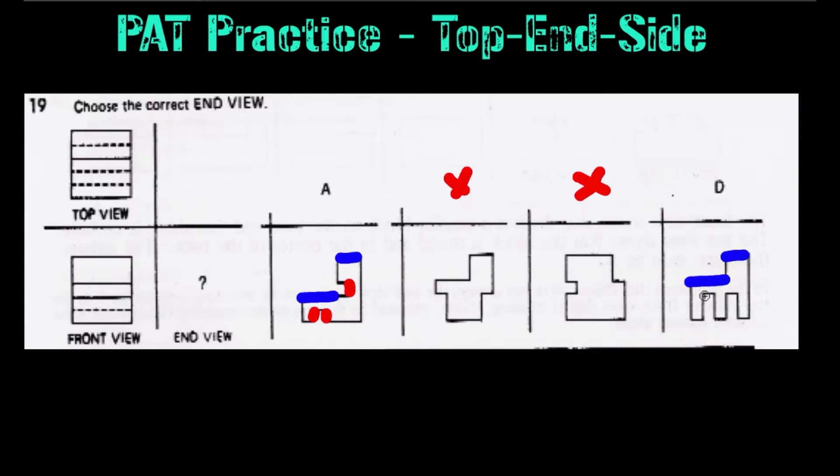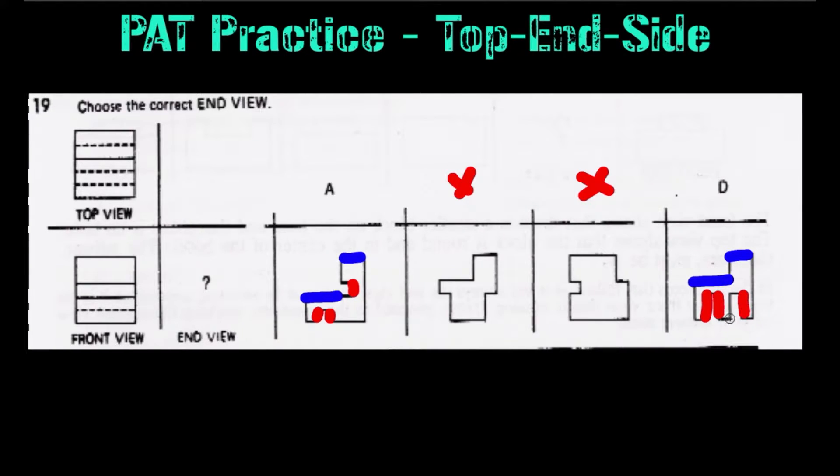Now moving on to D, we can see here that we have a dotted line here, a dotted line here, and a dotted line here. The reason why I'm not highlighting this dotted line is because it is in line with a solid line.